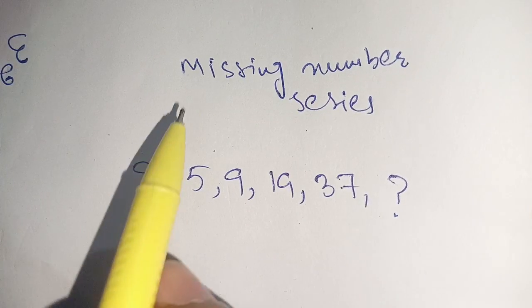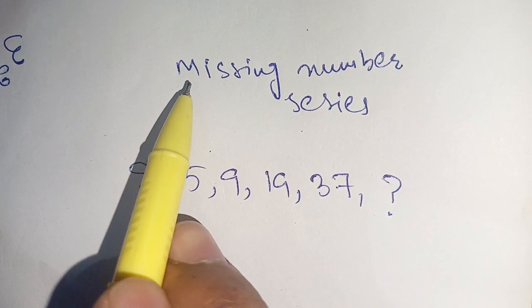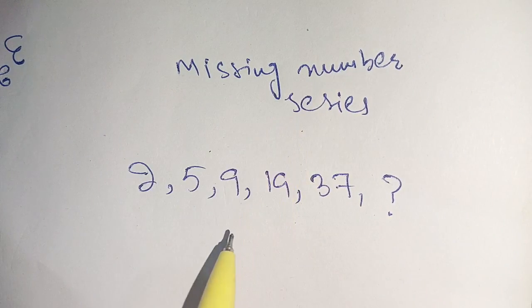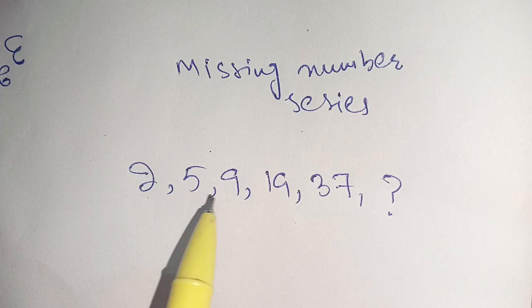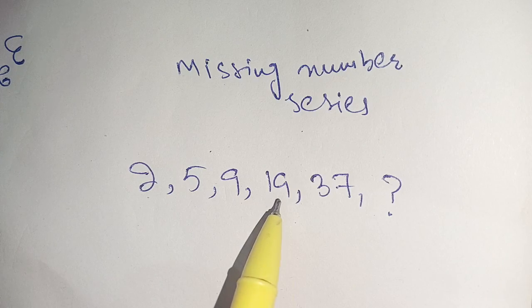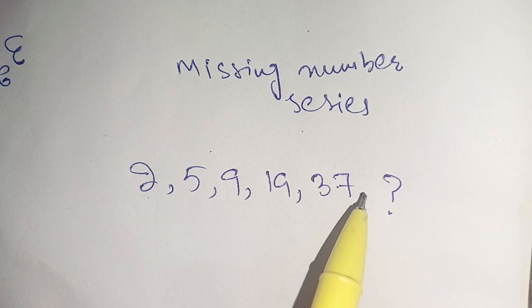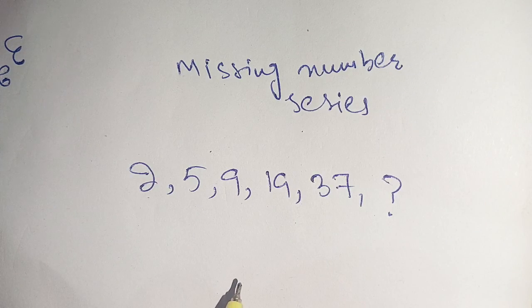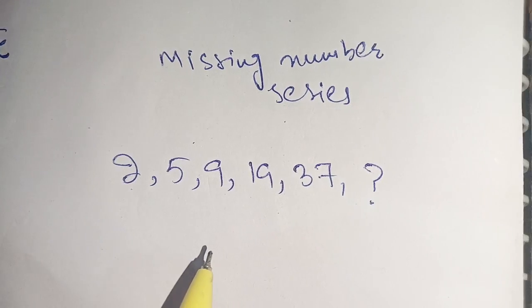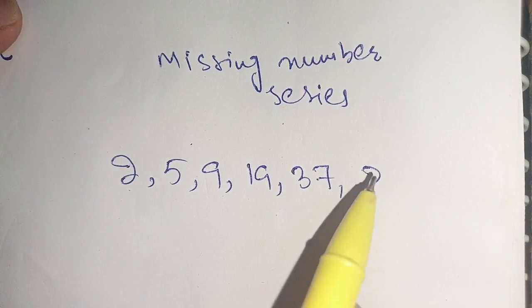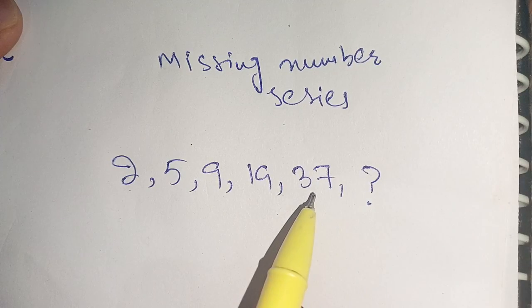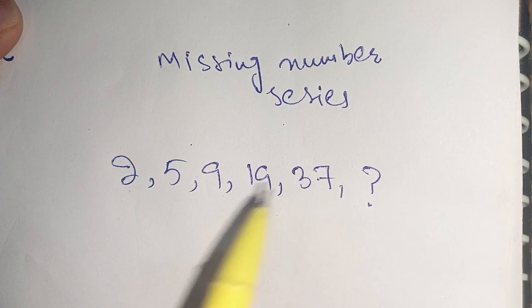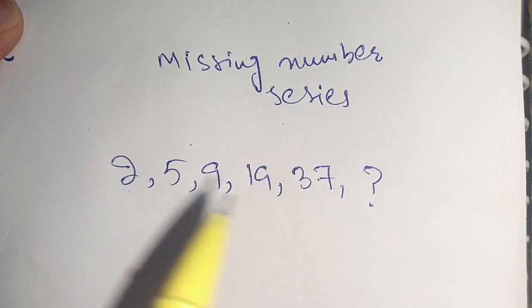Hello everyone. In today's video we are going to solve this missing number series. Here is 2, 5, 9, 19, 37, and a question mark. We have to replace this question mark with the number which follows this pattern.